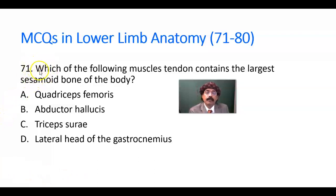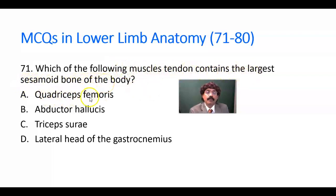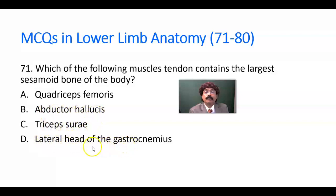Question number 71. Which of the following muscle tendons contains the largest sesamoid bone of the body? Options: quadriceps femoris, abductor hallucis, triceps surae, lateral head of the gastrocnemius. What is the answer?